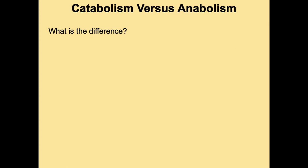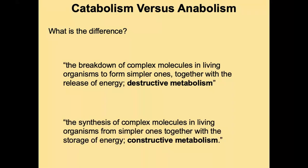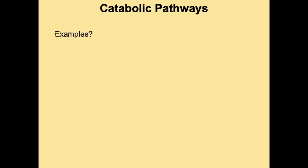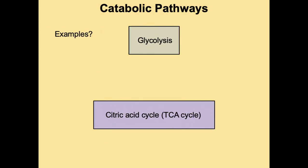In the previous lectures we've looked at catabolic processes such as glycolysis and the citric acid cycle. But the body also has anabolic processes — what is the difference? The top description is catabolism and the bottom is anabolism. I always remember this by the use of anabolic steroids that bodybuilders use — that's the building up of muscles. So anabolism is where you're building something, making it bigger, whereas catabolism is destructive. Processes such as glycolysis and the citric acid cycle are known as catabolic pathways.